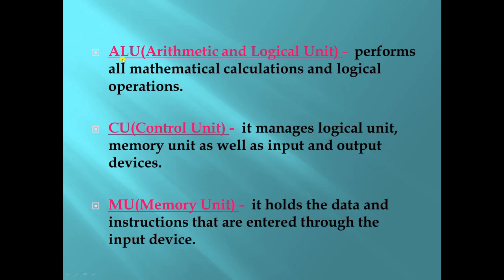ALU means arithmetic and logical unit — it performs all mathematical calculations and logical operations. CU means control unit — it manages the arithmetic and logical unit, memory unit, as well as input and output devices. MU means memory unit — it holds the data and instructions entered through the input device.